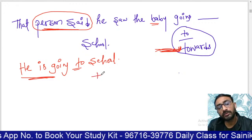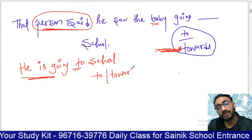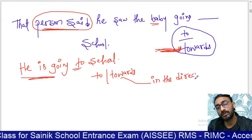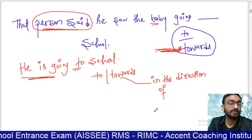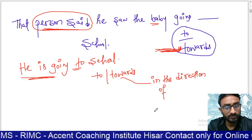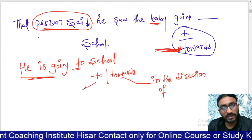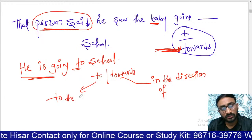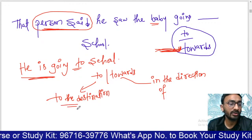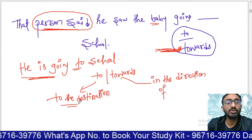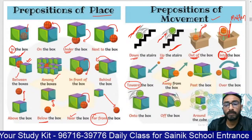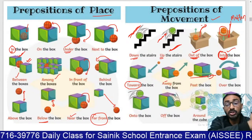The basic difference between 'to' and 'towards': 'towards' means in the direction of something — 'kisi cheez ki direction mein.' 'To' means going to a specific destination — you are sure that the person is going to that place. 'Away' means 'dur jana' (going far), and 'past' means passing something — like a car went past you.